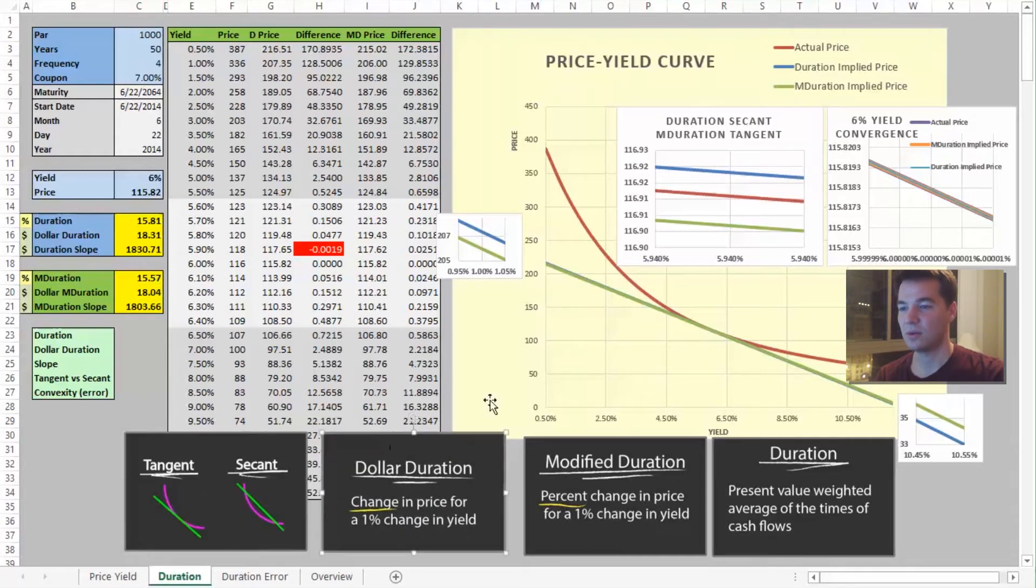All right, so it looks like the duration line and modified duration lines are tangent to this price-yield curve. But they both meet the price-yield curve at the point of 6 percent and a price of 115.82. And they have different slopes, which are derived by taking the duration figure times our original price. So they can't both be the tangent line, just remembering our basic algebra.